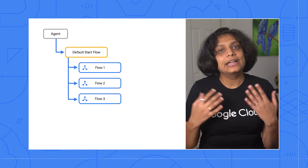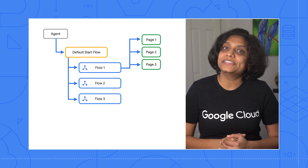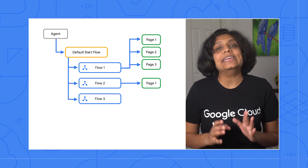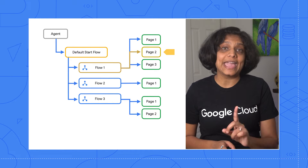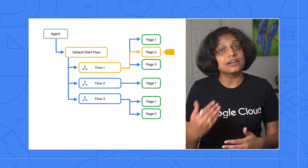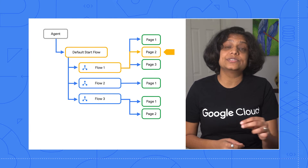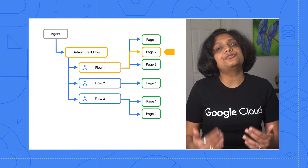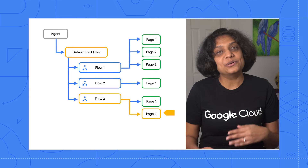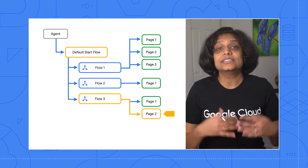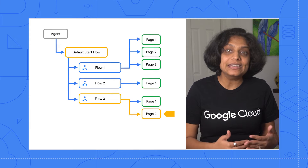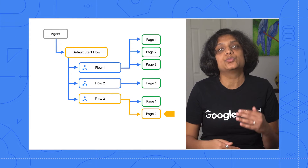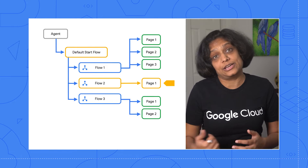Now, if we double click on any flow, we find that it's a collection of pages which represent the state of the CX session. At any given moment, exactly one page is the current page, and the current page is considered active, and the flow associated with that page is considered active as well. Every flow has a special start page. When a flow initially becomes active, the start page becomes the current page, and depending on where the user is in the conversation, the current page will either stay the same or transition to another page.